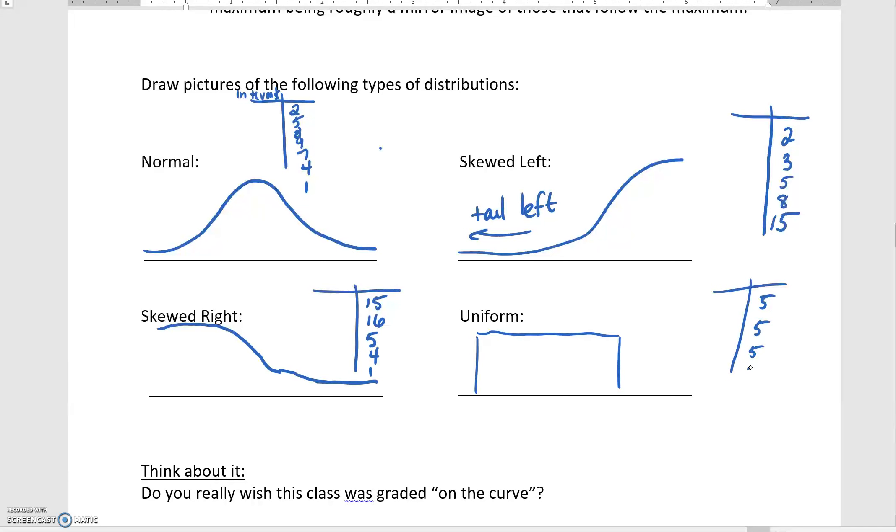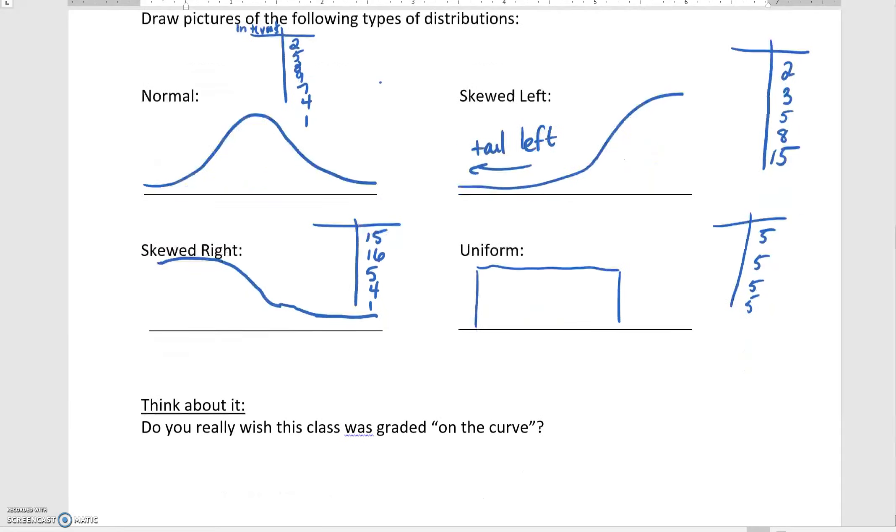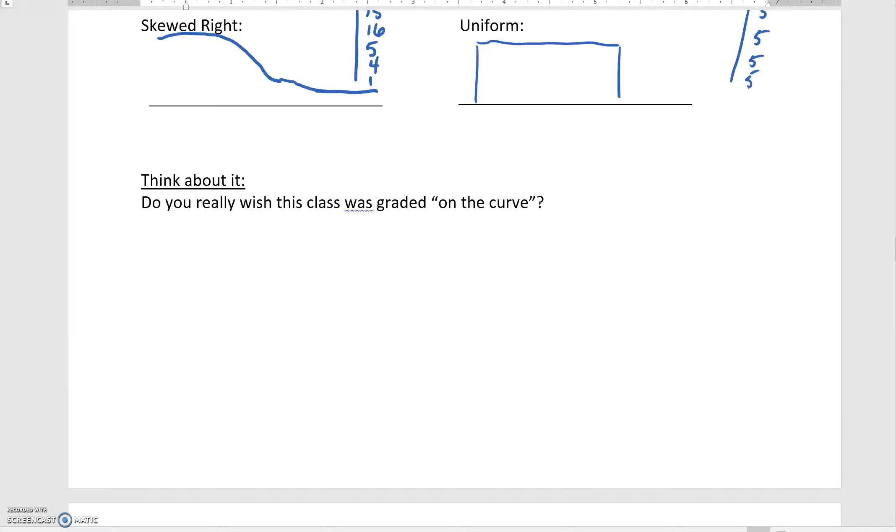For example, they could all be five. Okay, so we're going to talk more about normal distributions later in the course, but one thing to just kind of talk about in your real life is sometimes students say they wish things were graded on a curve. Well, in a true curve, your distribution of grades would look like a bell curve, and most grades would be exactly in the middle—would be a C.